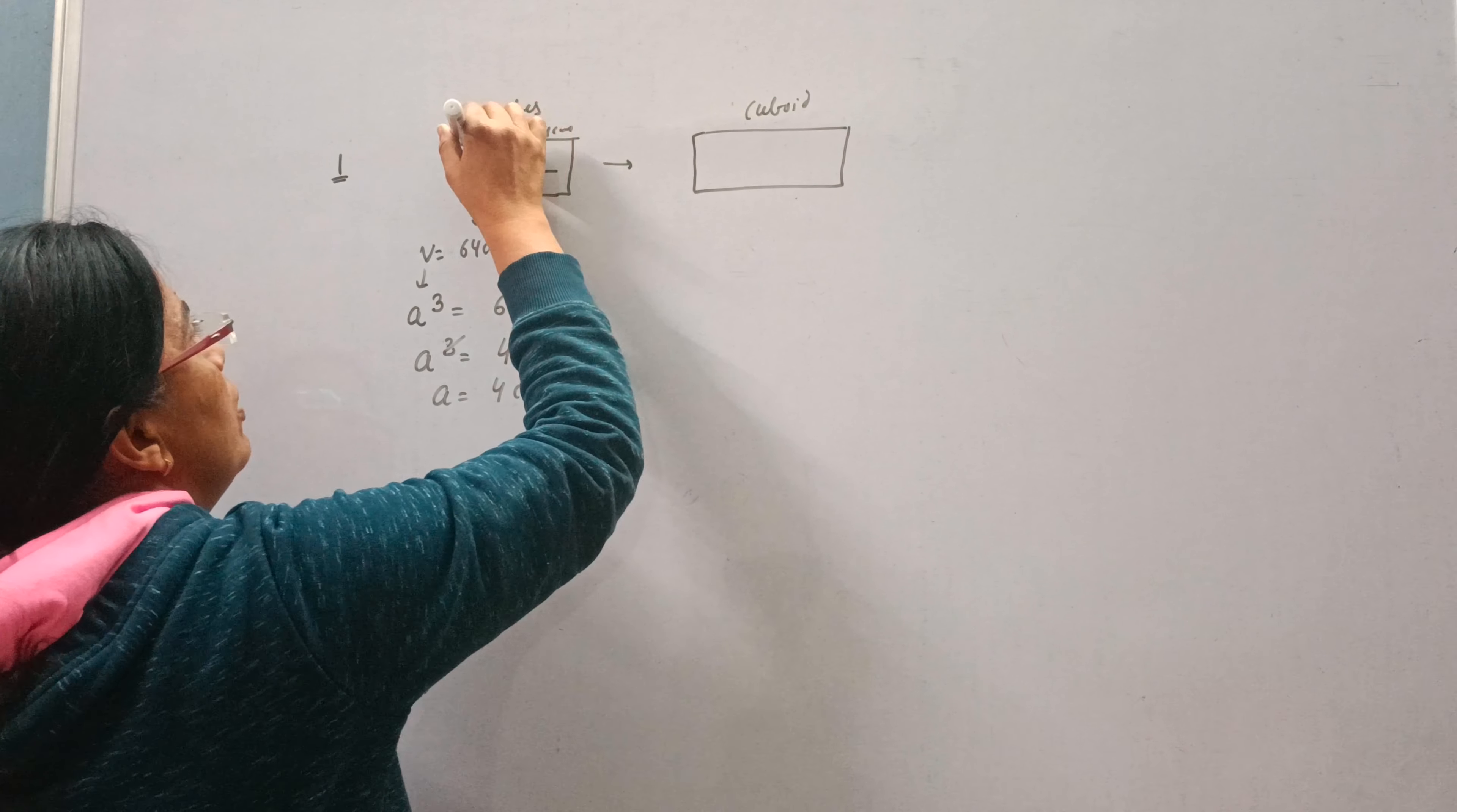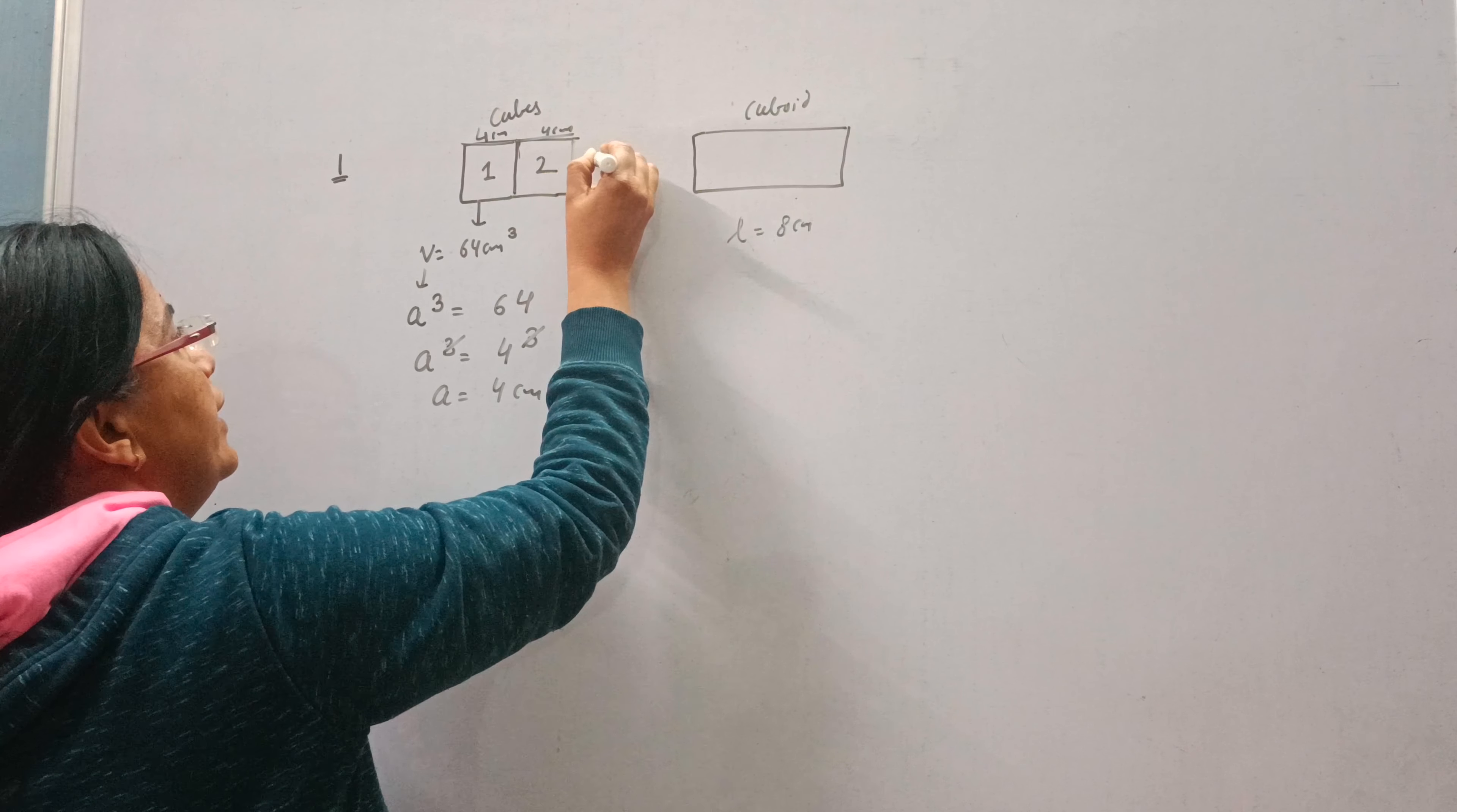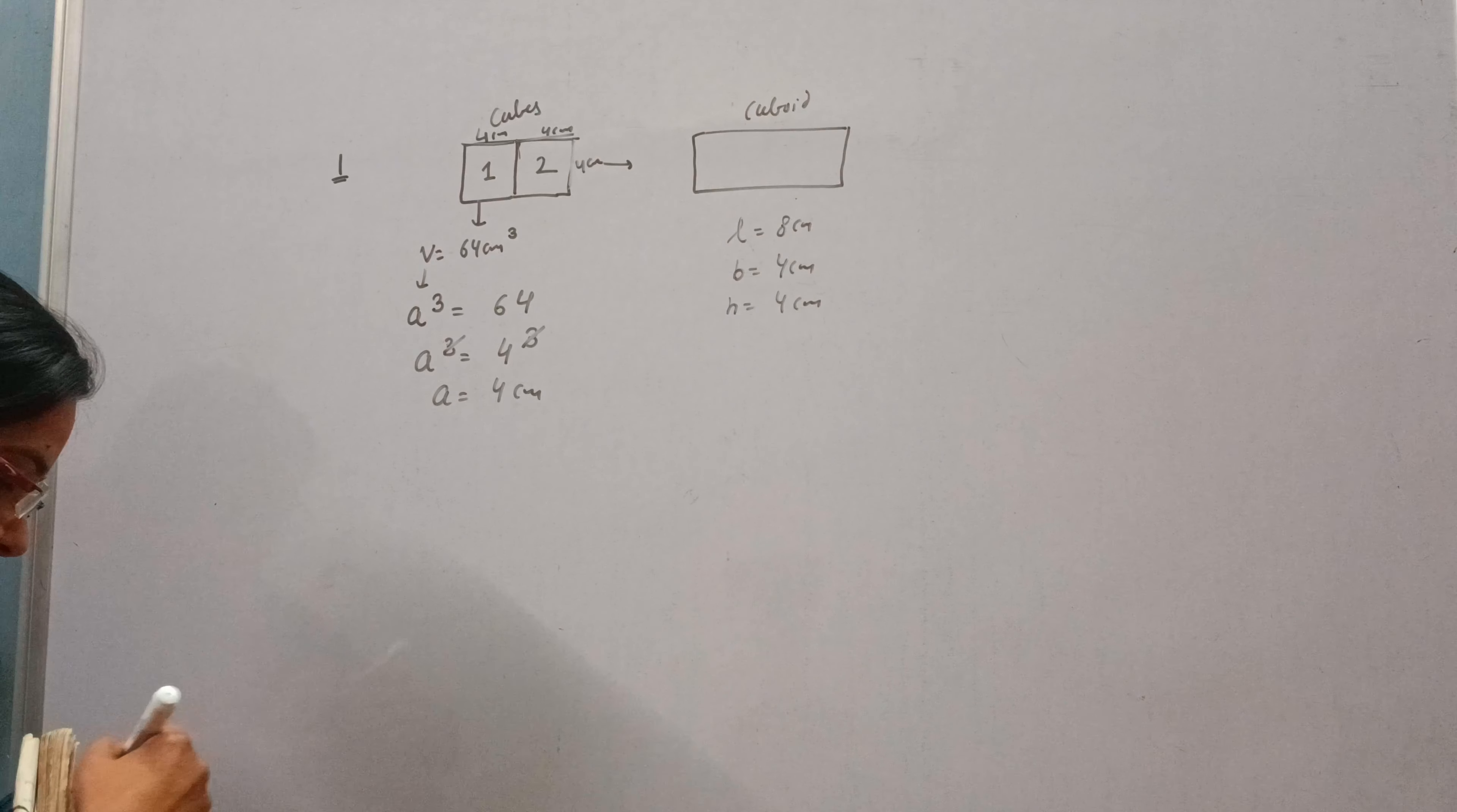So length of the cuboid will become 4 plus 4, 8 cm. And breadth and height will remain same, 4 cm. And again height is also 4 cm.